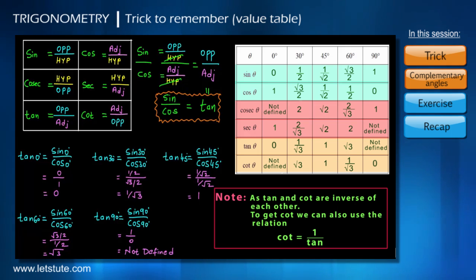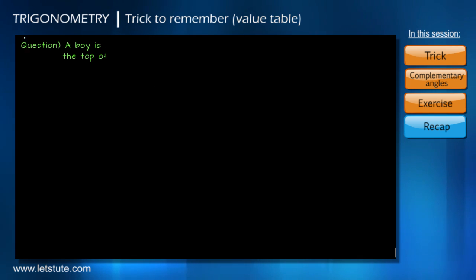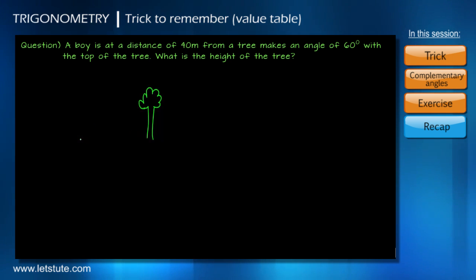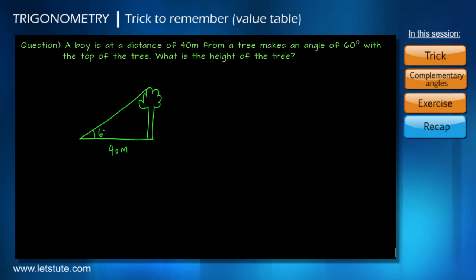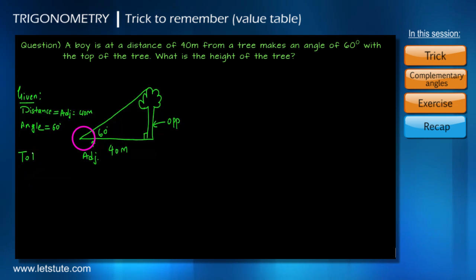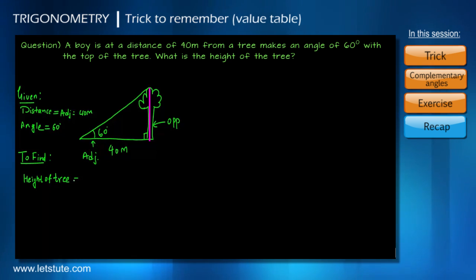Now let's do a small exercise to recap what we have learned and use it in actual practice. Suppose you are given a question: a boy is at a distance of 40 meters from a tree and makes an angle of 60 degrees with the top of the tree. What is the height of the tree? Let's first draw a rough sketch. The tree is the opposite side of the 60 degree angle, and the distance from the tree on the ground is the adjacent side. We are given the adjacent side of 40 meters and the angle of 60 degrees, and we need to find the height of the tree, which is the opposite side.